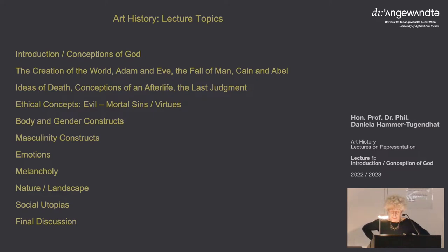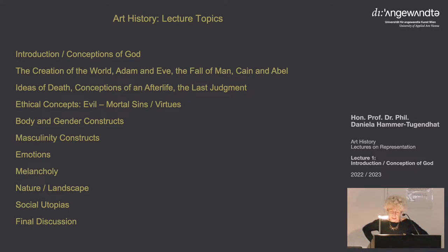We should try to turn things around and ask just what it is that we see as appertaining to us. One of the main basic assumptions to consider is the conception we have of God. I would like to show you how the Christian conception of God emerged, what its sources were, how it has changed over time, its specific characteristics, and above all how images — painted or sculptural — have contributed to shaping the ideas we have of God.